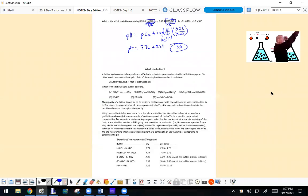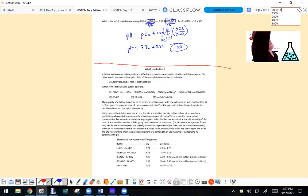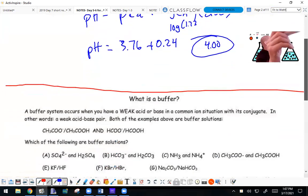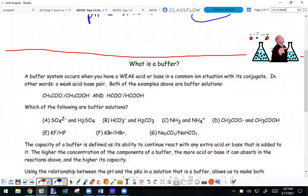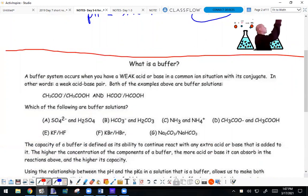All right, so I want to go over this little part right here in the note. It's going to be quick and short. I did talk about this when I showed you how to do buffers, but officially, a buffer is when you have a weak acid or base and its conjugate.